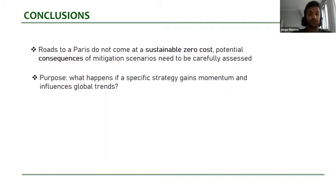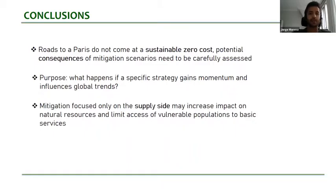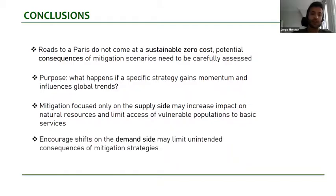There is no silver bullet for mitigation objectives, but the scale of this challenge calls for assessment of a variety of solutions. An important take-home message is that if mitigation is shifted mainly to the supply side, there is an increased risk that affects water resources, delays emission reductions, and causes water and food prices to escalate, which would limit access to these basic services by vulnerable populations. On the other hand, if policies incorporate a focus on the demand side and encourage societal lifestyle changes in diet, transport, and consumption patterns, these unintended interactions could be reduced.